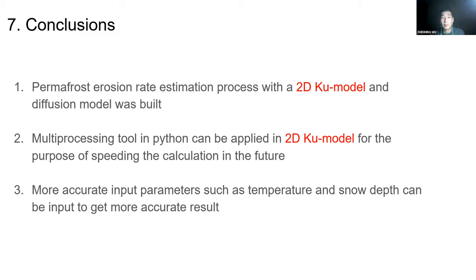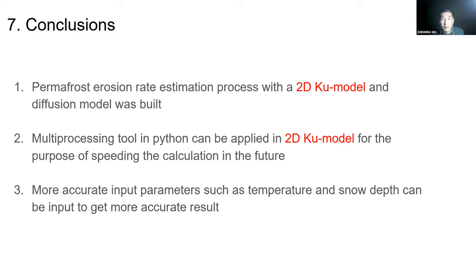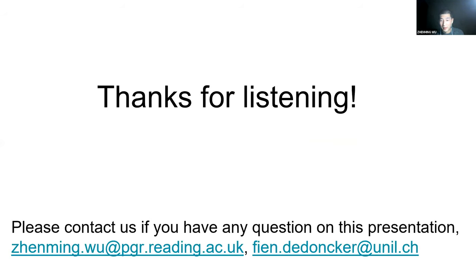Our conclusions: a permafrost erosion estimation process with a 2D Q-model and diffusion model was built. For future use of these coupled models, consider using multiprocessing tools in Python because the 2D Q-model is quite computationally consuming and very slow for 2D calculation. Also, you can input more accurate parameters — the temperature and snow depth data we used are from only one climate station, which may bias the results. Thank you for listening, and please contact us if you have any questions.